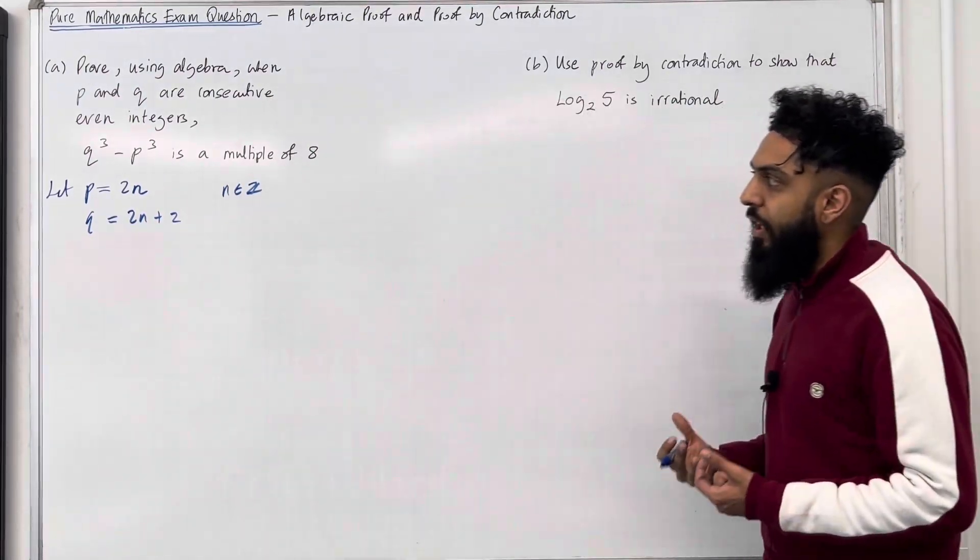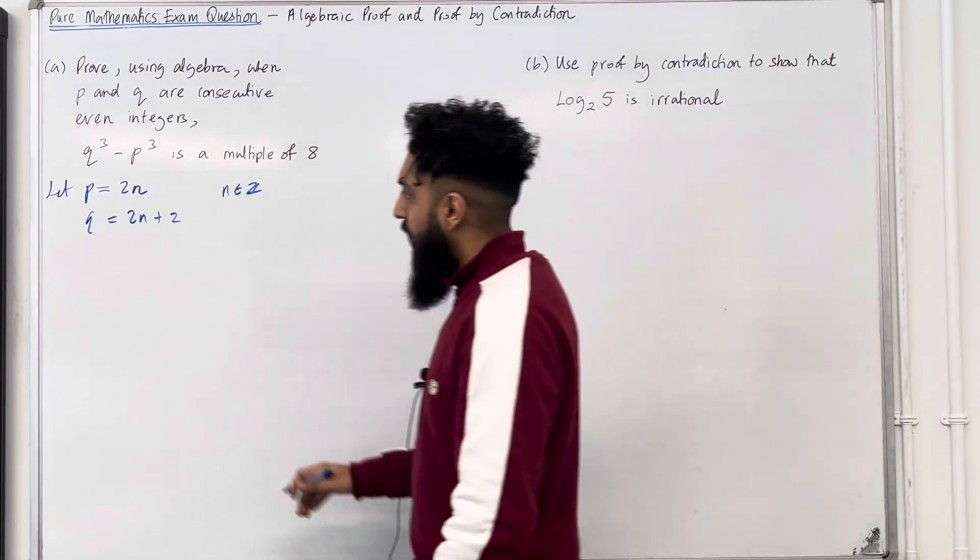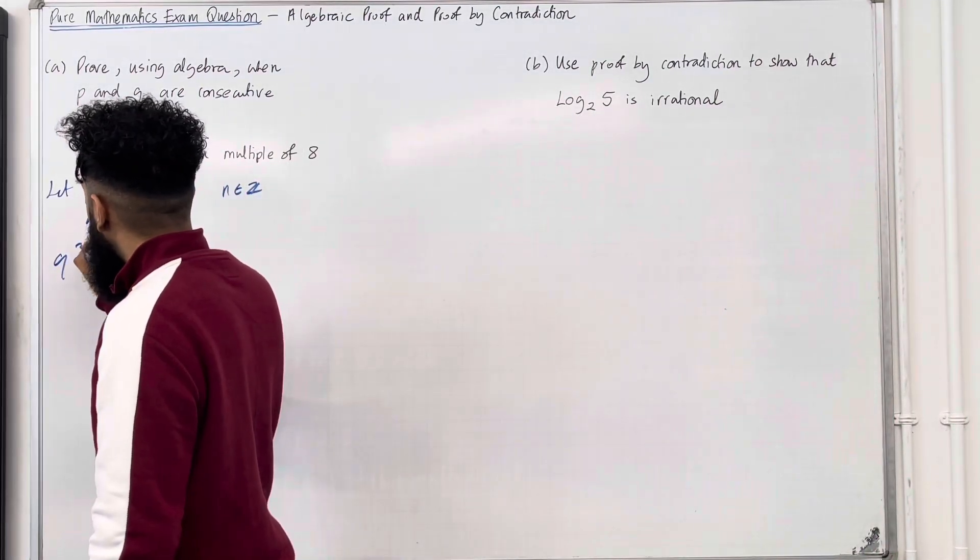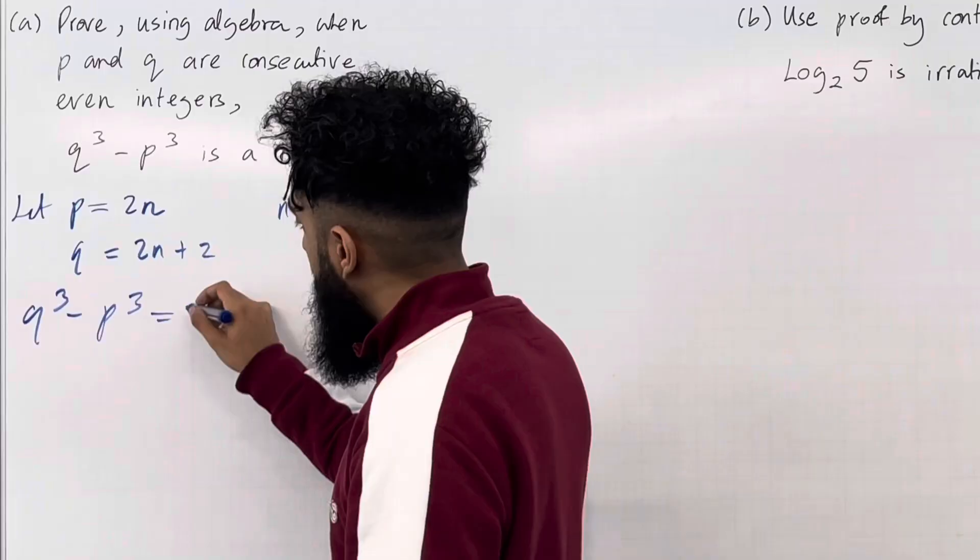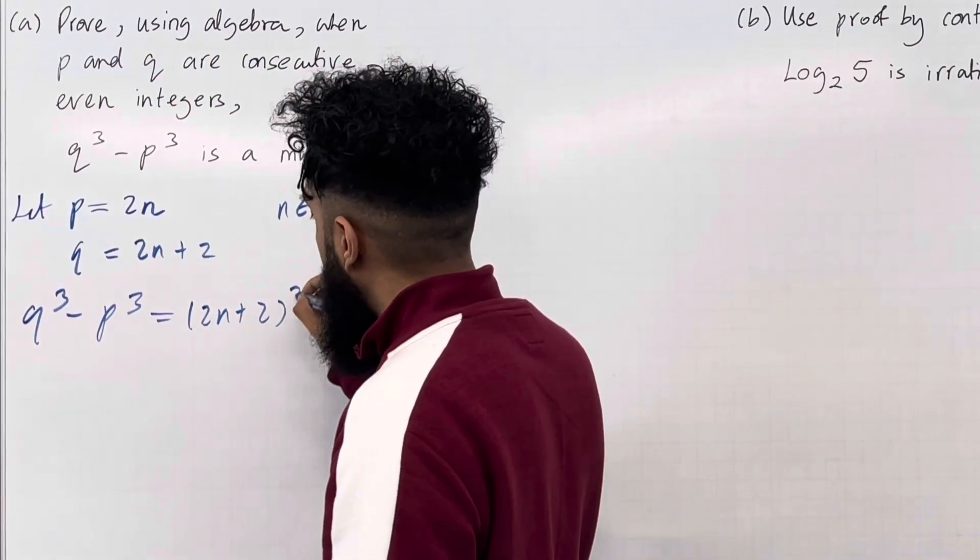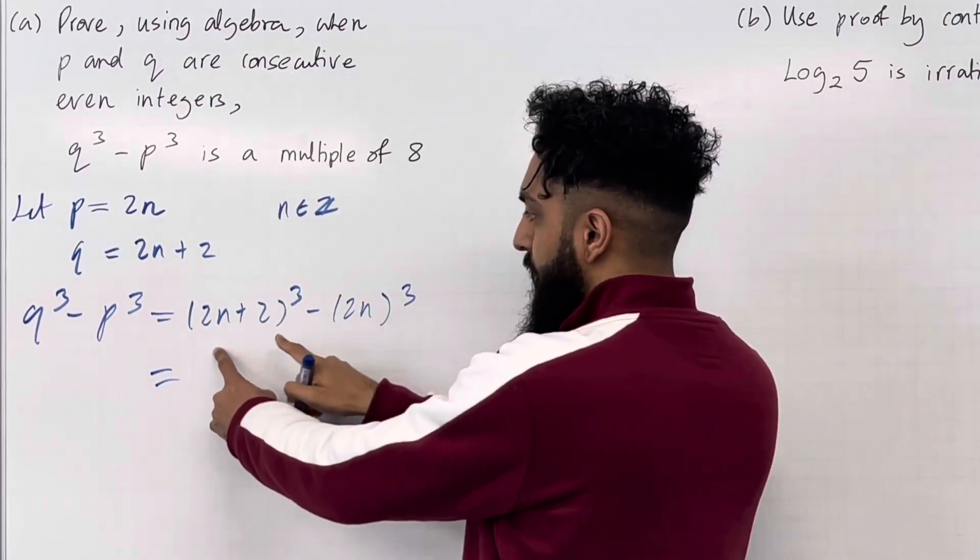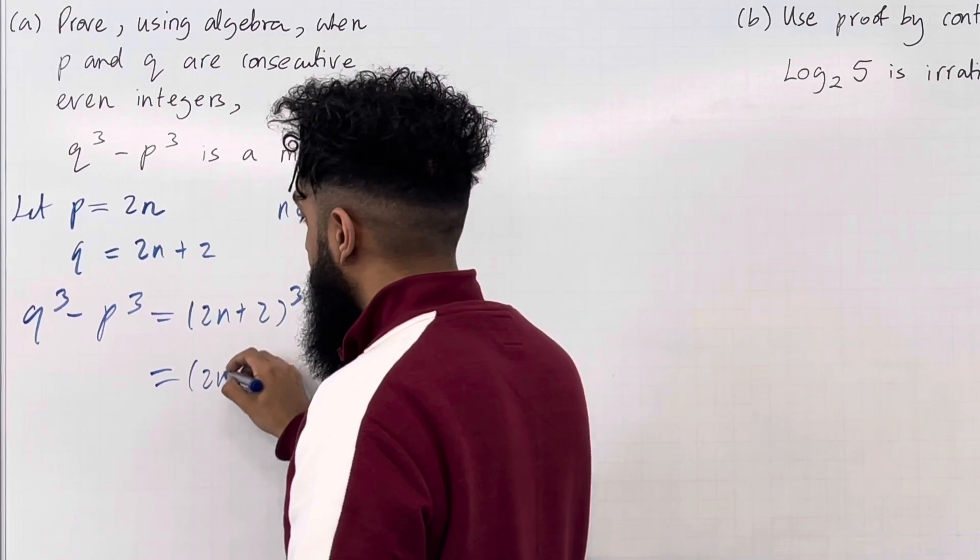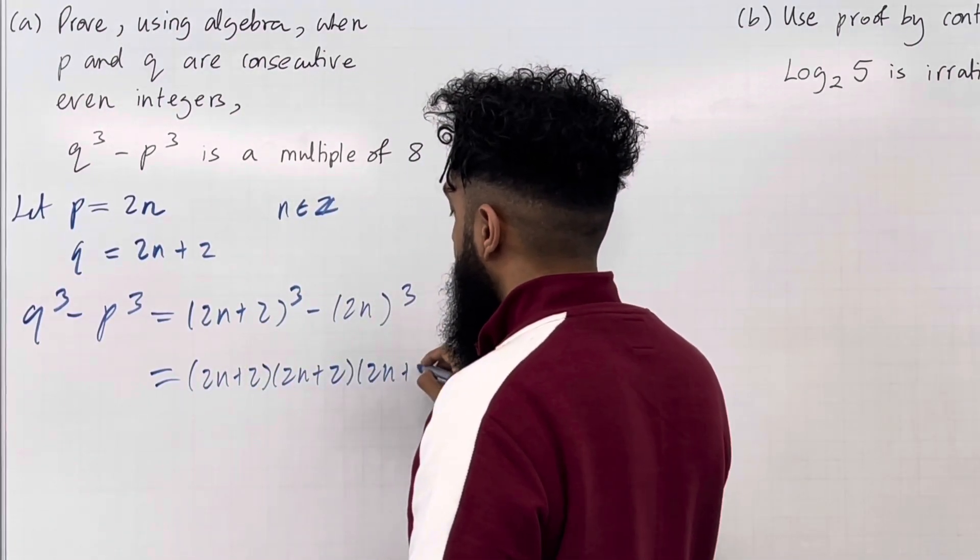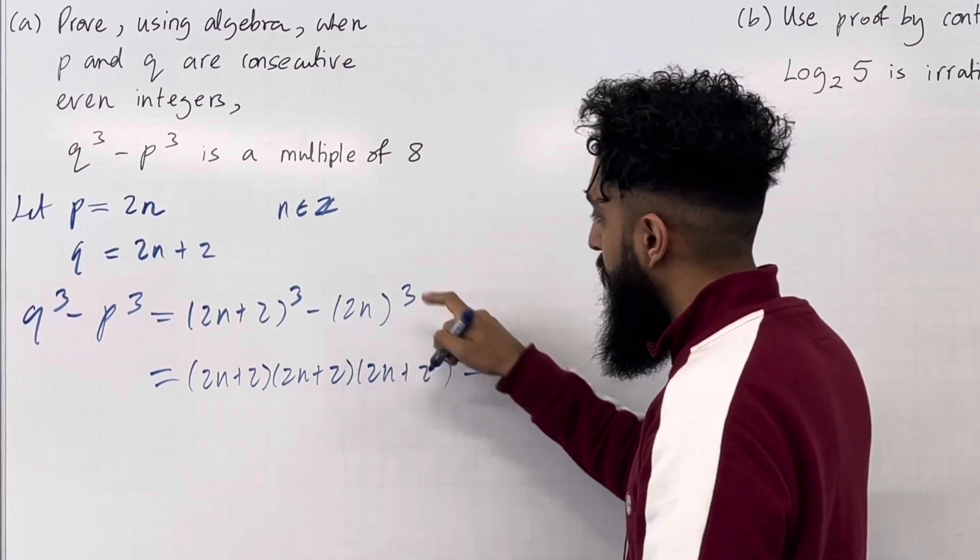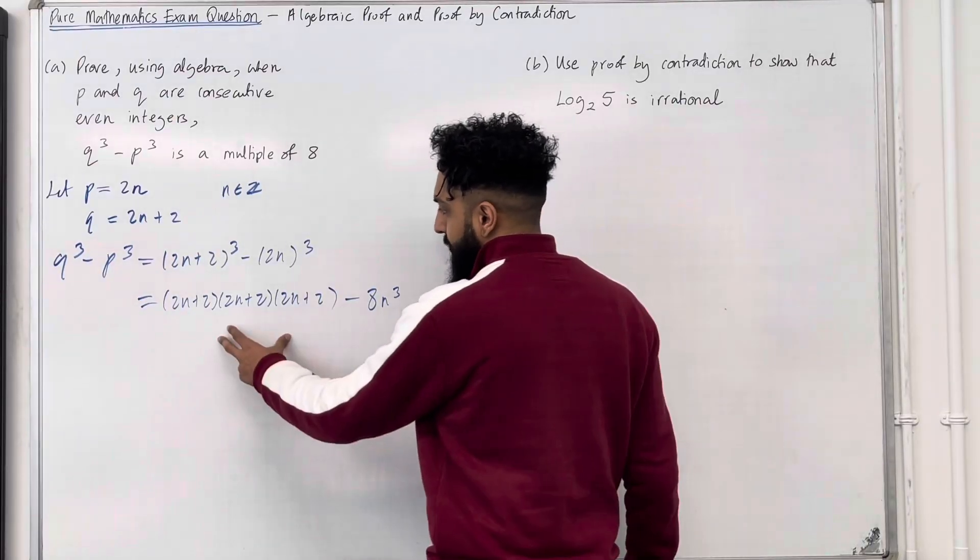Now what we must show is that Q cubed minus P cubed is a multiple of 8. So let's work out the expression for Q cubed minus P cubed. This must equal 2N plus 2 in bracket cubed minus 2N cubed. We can open this up into three brackets. So we've got 2N plus 2, 2N plus 2, 2N plus 2, take away 2 cubed is 8, N cubed is just N cubed. We must expand these three brackets.